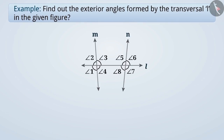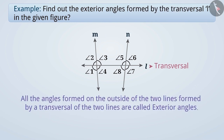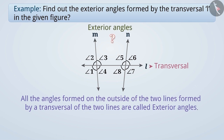Next example: in the given figure, line L is the transversal of line N and line M. Find out the exterior angles formed by the transversal L. We already know that all the angles formed on the outside of the two lines by a transversal are called exterior angles. Based on this, can you tell the exterior angles in this figure? Think for a while.